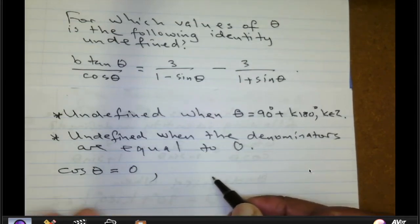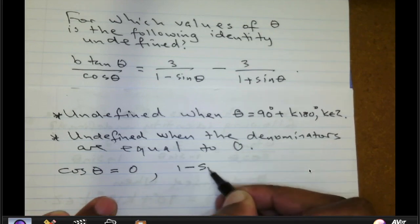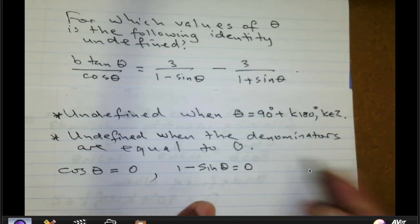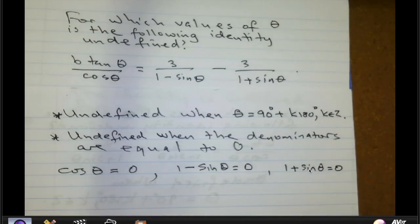The second equation we need to solve will be 1 minus sine of theta is equal to 0. And the third angle we need to solve will be 1 plus sine of theta is equal to 0. So solve each one of these for theta and conclude from there because that is where you will get your values of theta that will make the identity undefined.